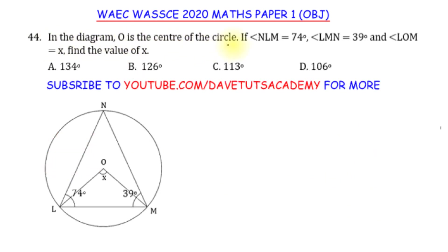In the diagram, O is the center of the circle. If angle NLM is 74 degrees, and angle LMN is 39 degrees, and angle LOM is X, you have to find the value of X. So how do we go about solving this question?